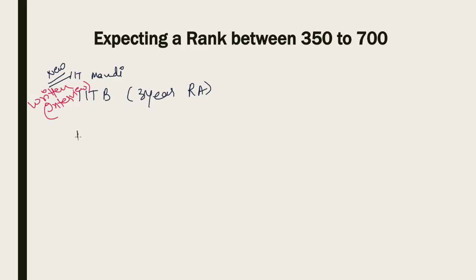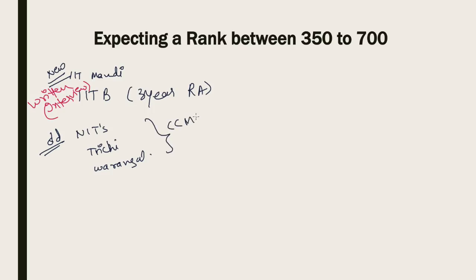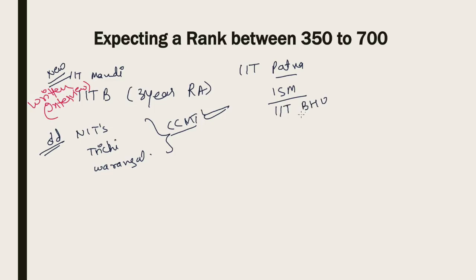For rank up to 700, you can also get top NITs through CCMT counselling. Old NITs like NIT Trichy and NIT Warangal are chosen by the best rankers. New IITs like IIT Patna are also available in this range. ISM Dhanbad, now a new IIT, and IIT BHU (Banaras University) are also available within this rank range.